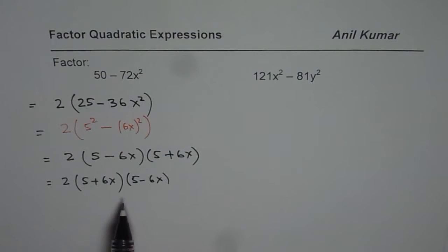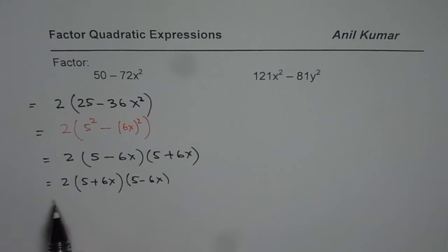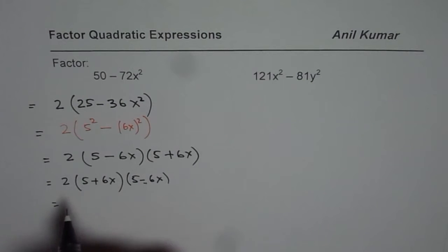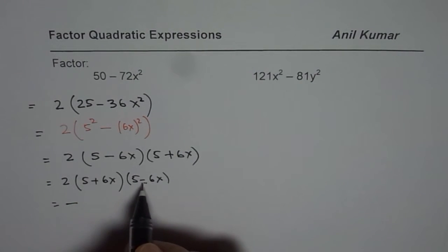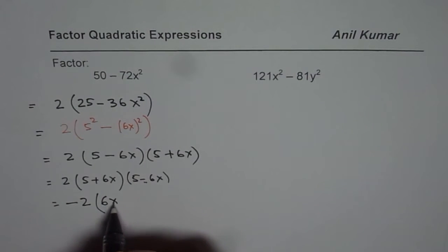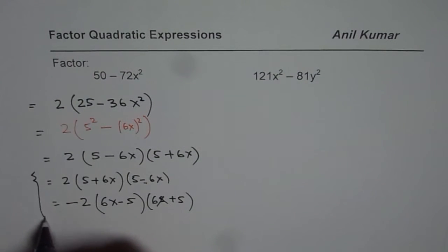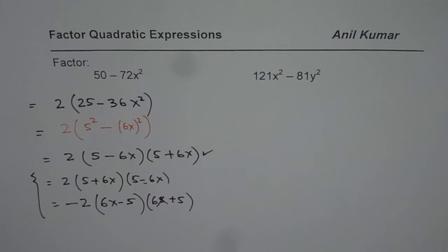At times what you may do is you may like to write 6x first. That's an alteration but remember if you do that then this negative sign should be taken care of. So what I will do is I'll show you that way also. So then in that case this negative sign comes here. So we have 6x minus 5 and then we have 6x plus 5. So these are alternate ways of writing the same thing but this is good enough for the test paper.